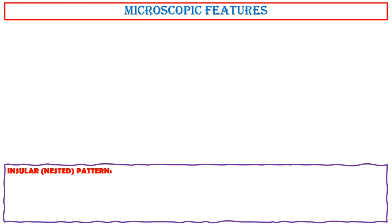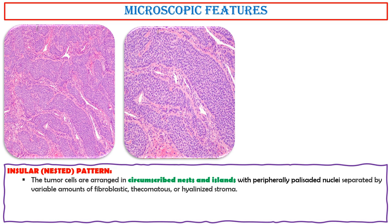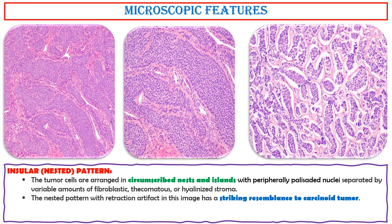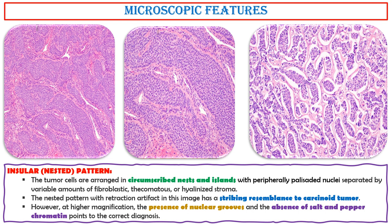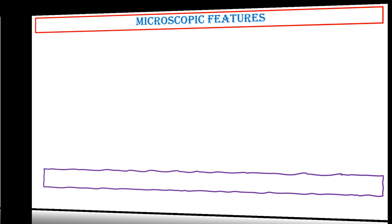Insular nested pattern. The tumor cells are arranged in circumscribed nests and islands, with peripherally palisaded nuclei separated by variable amounts of fibroblastic, thecomatous, or hyalinized stroma. The nested pattern with retraction artifact has a striking resemblance to carcinoid tumor. However, at higher magnification, the presence of nuclear grooves and the absence of salt-and-pepper chromatin points to the correct diagnosis.